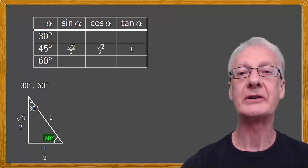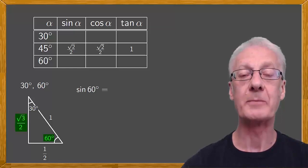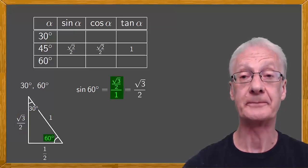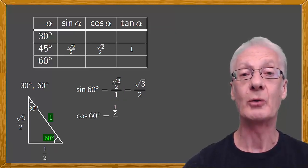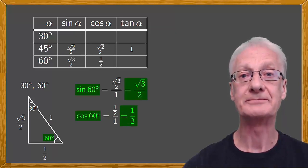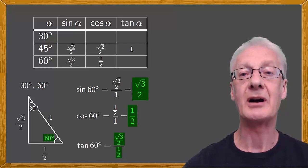Now consider the angle of 60 degrees. The sine of 60 degrees is the opposite side, root 3 over 2, divided by the hypotenuse 1, which is simply root 3 over 2. The cosine of 60 degrees is the adjacent side, a half, divided by the hypotenuse 1, which is a half. We'll write these in the table. The tangent — sine over cosine — is root 3 over 2 divided by a half, which simplifies to root 3.